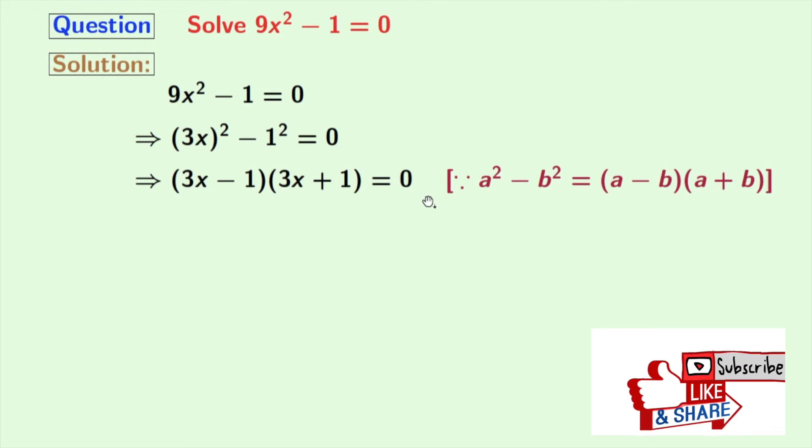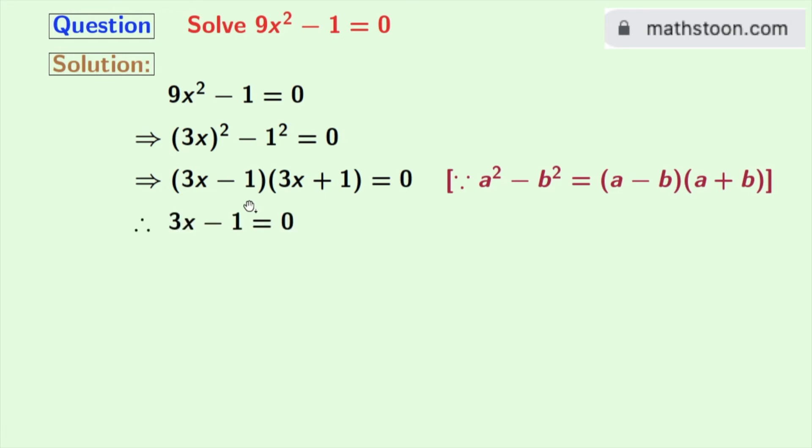Now remember that if the product of two numbers is 0, then the value of those numbers individually will also be 0. So either 3x - 1 = 0 or 3x + 1 = 0.